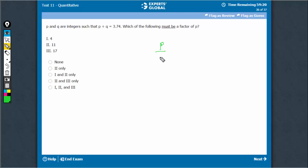See, if P upon Q is equal to 3.74, that means P is equal to 3.74 times Q. Q must be a multiple of 50 or something so that this becomes an integer. P is an integer, we know for sure.